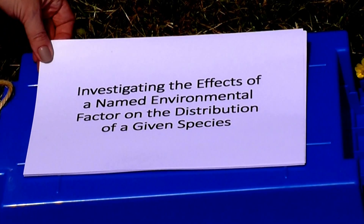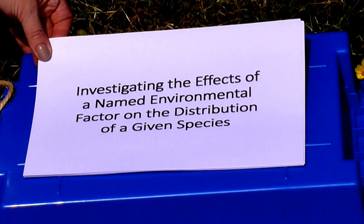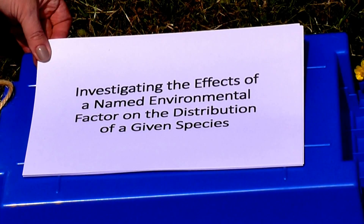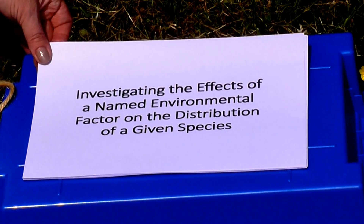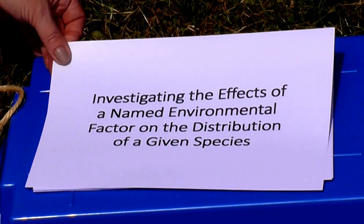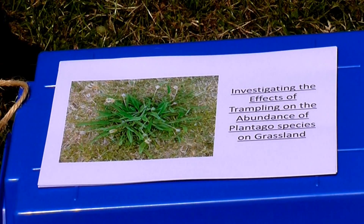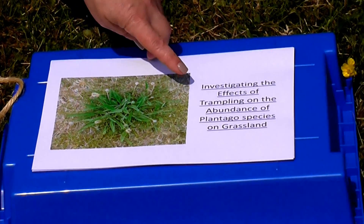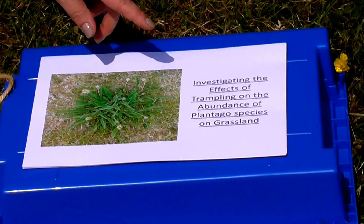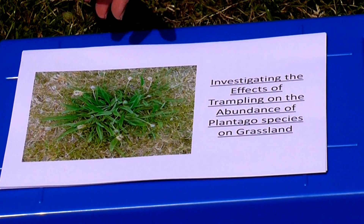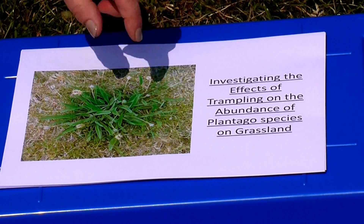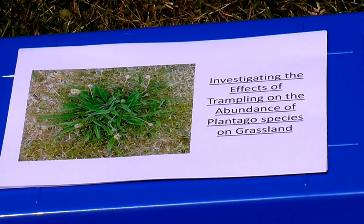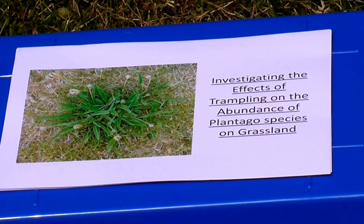Today we're going to investigate the effects of a named environmental factor on the distribution of a given species. This is one of the required A-level biology practicals, but it's not required for AS. The actual investigation we're going to do today is to investigate the effects of trampling, which is a biotic factor — but you could also investigate mowing or grazing — on the abundance of plantago species on grassland.